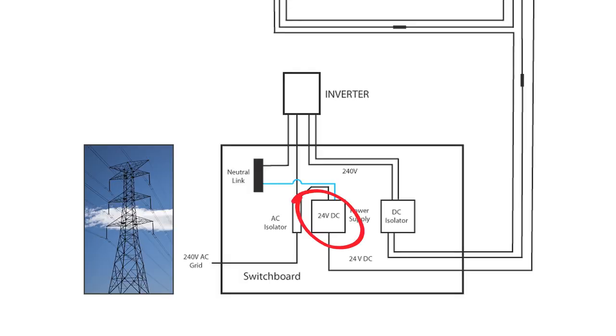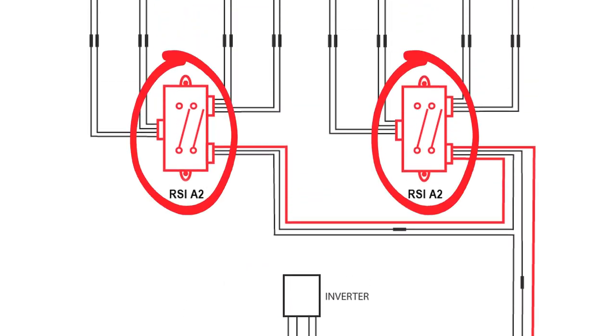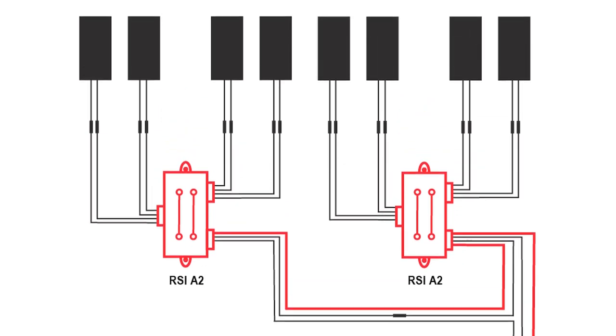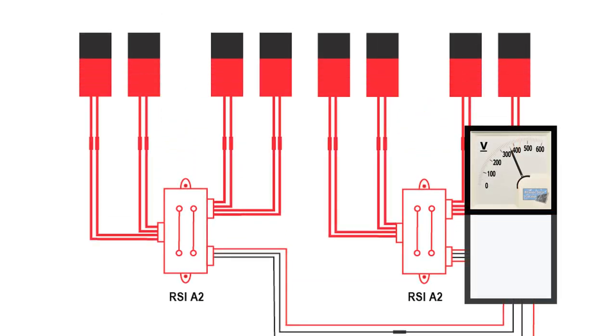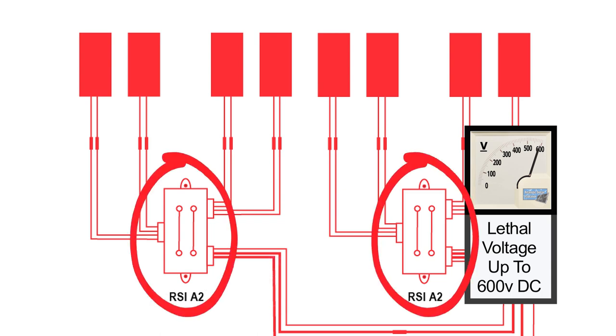A 24 volt DC power supply is energized from the grid AC supply. This then supplies the required power to the RSI, which in turn closes the desired contacts. This will then allow all connected solar panels to combine their voltage and supply DC volts to the inverter. The contacts continuously remain in the combining position until their supply is interrupted.